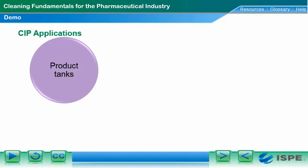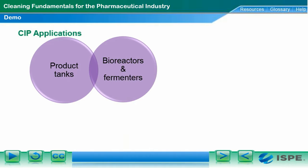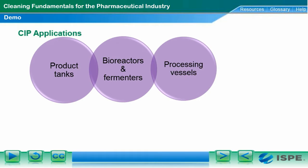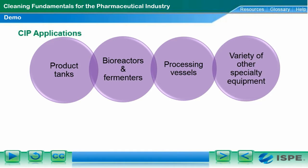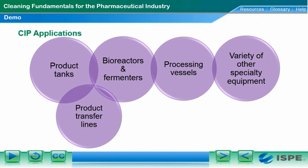Integrating CIP into the process is a vital step in designing a clean and validatable process. To do this, start with the process piping and equipment design.